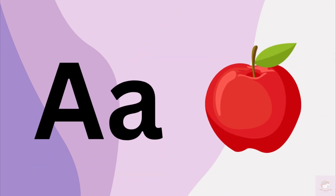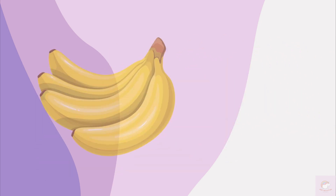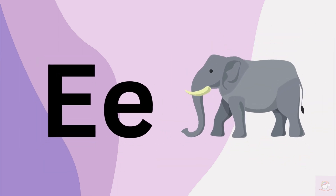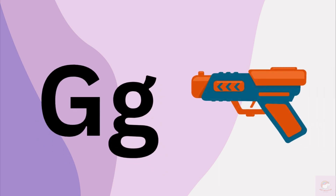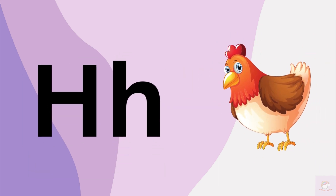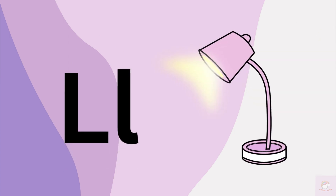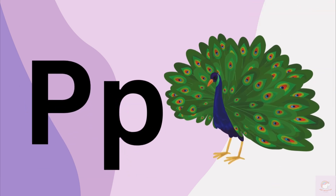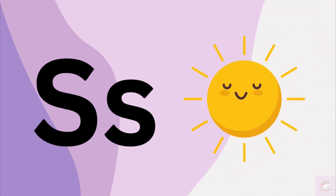Let's sing the ABC songs. M for mango, N for nest, O for owl, P for peacock, Q for queen, R for rose, S for sun.